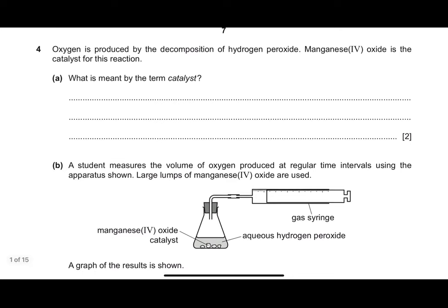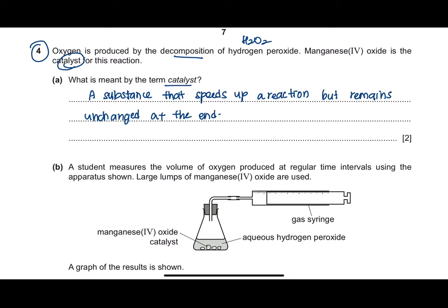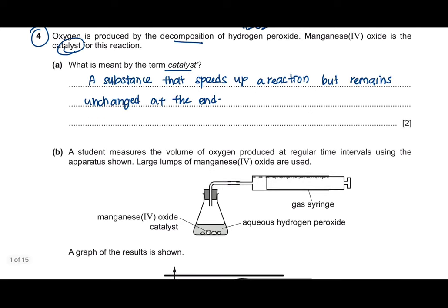This is the May-June 2020 paper, question 4. Oxygen is produced by the decomposition of hydrogen peroxide, and manganese oxide is the catalyst for this reaction. Question A asks: what is meant by the term catalyst? A catalyst is a substance that speeds up a reaction but remains unchanged at the end. Please memorize this definition as it is a common question for this chapter.